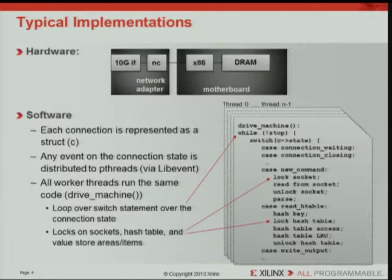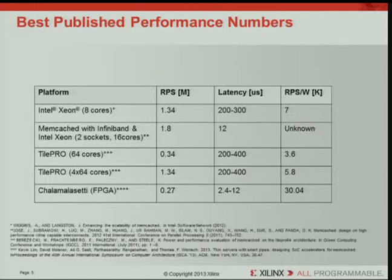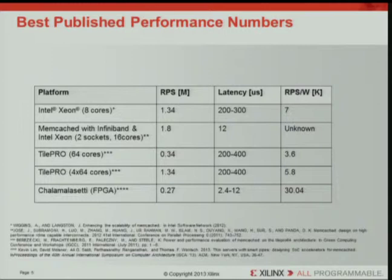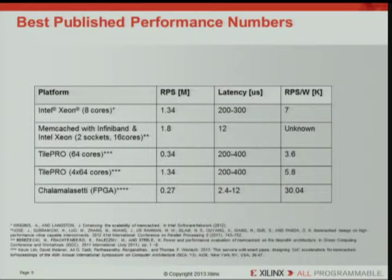Let's take a quick look at what you can achieve with today's x86. The best number we found was published by Intel at the end of 2012: a Memcached-compliant implementation on an Intel Xeon single socket with eight cores achieves 1.34 million requests per second, with a latency of 200 to 300 microseconds, and a power efficiency of 7,000 requests per second per watt.